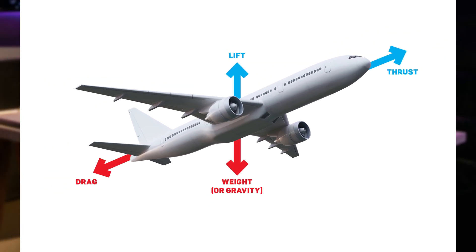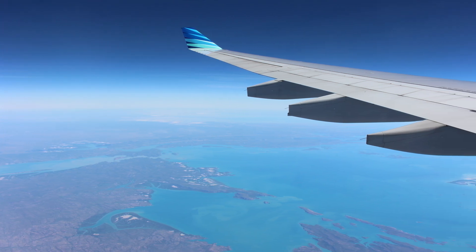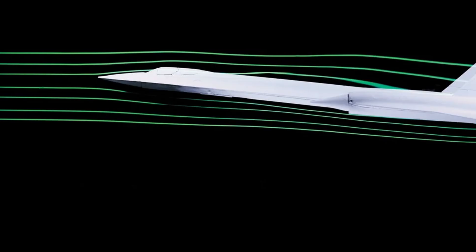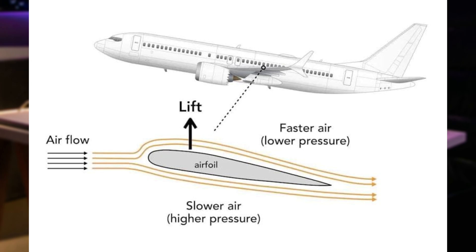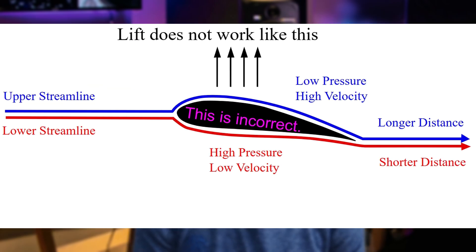Number one is lift, the force that overcomes gravity. Lift is the key force that allows an airplane to rise into the sky. The answer lies in the shape of airplane wings. Aircraft wings are designed with a special shape known as an airfoil. When air flows over and under the wings, it moves at different speeds due to the wing's curvature. The air moving over the top travels faster, creating low pressure, while air moving below travels slower, creating high pressure. This pressure difference creates an upward force known as lift, which pushes the airplane into the air. This principle is explained by Bernoulli's principle, which states that faster-moving air has lower pressure. However, lift alone isn't enough — the plane also needs forward motion.